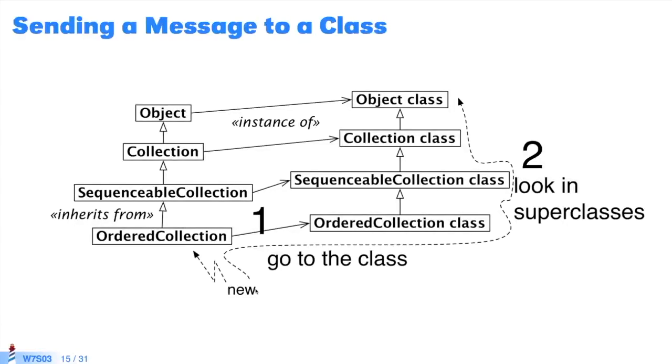When do we use this hierarchy? If I send the new message to ordered collection, where do I search? In the class. I query in each class whether or not new has been defined. Moving upwards, has it defined new, yes or no? Here, we utilize the key I mentioned at the beginning. To send a message, start with the class, then follow the inheritance chain. Up to this point.